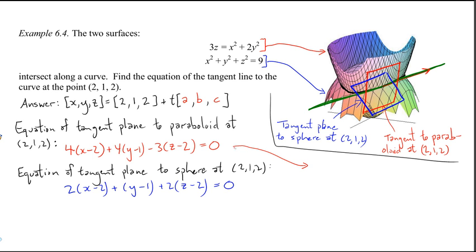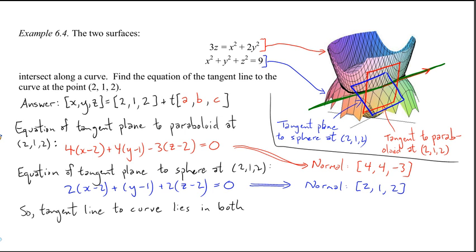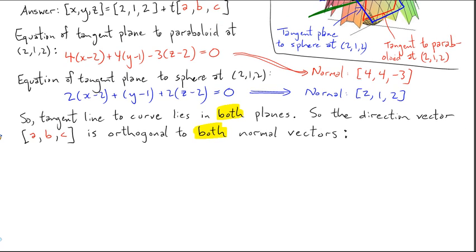And, let's jot down the normal vectors for each of these planes. For the red plane to the paraboloid, normal is [4, 4, -3]. For the blue plane to the sphere, normal is [2, 1, 2]. Now, the geometric insight which allows us to solve this problem is that the tangent line to the curve lies in both of these planes. So, what does that mean? It means the direction vector, ABC, which that's what we don't know. So, if the tangent line lies in both planes, the direction vector of the green line, ABC, is orthogonal to both of those normal vectors that define the plane.